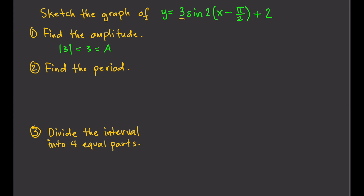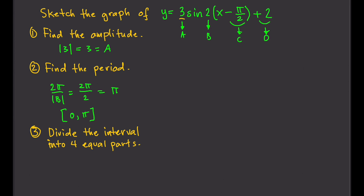The period is 2π over the absolute value of b. In this case, a is 3, b is 2, c is negative pi over 2, and d is 2. So the period is 2π divided by the absolute value of 2, which equals π. One period goes from 0 to π.